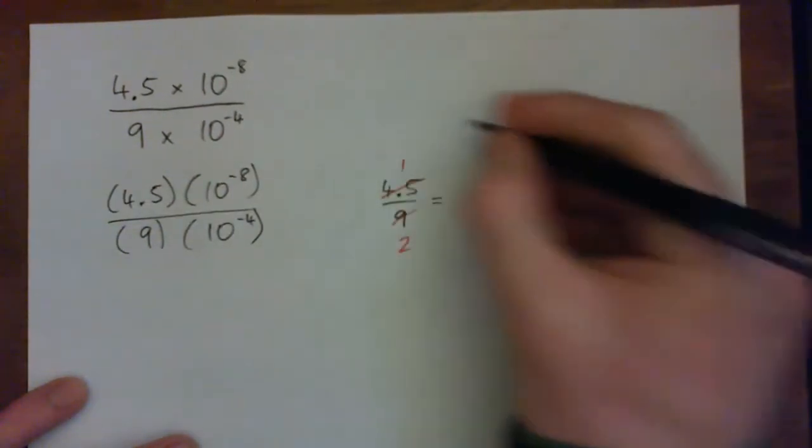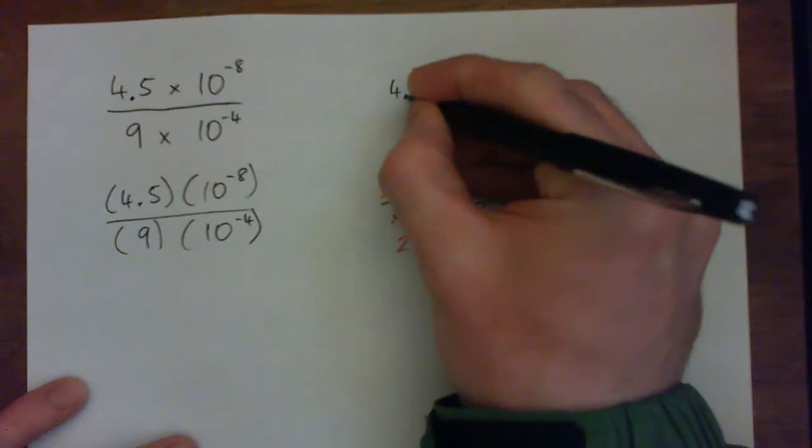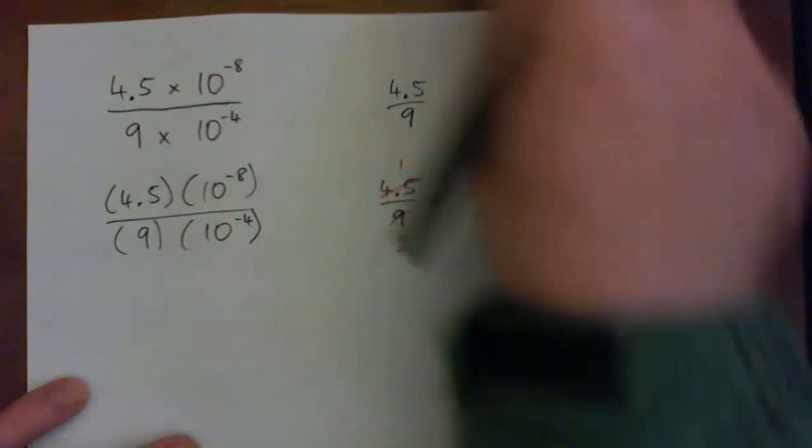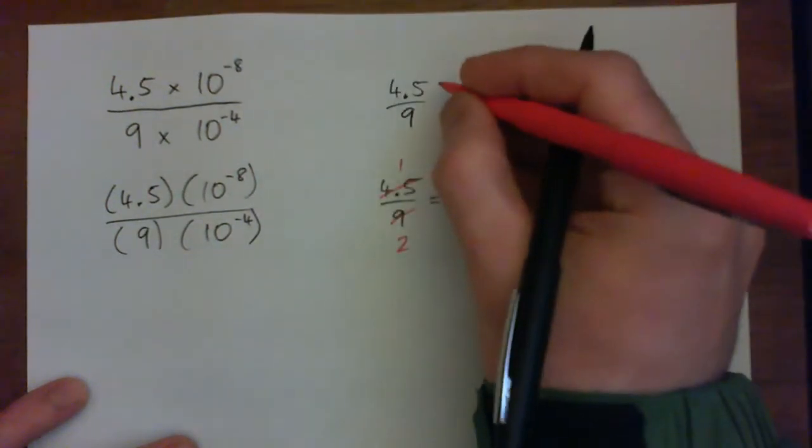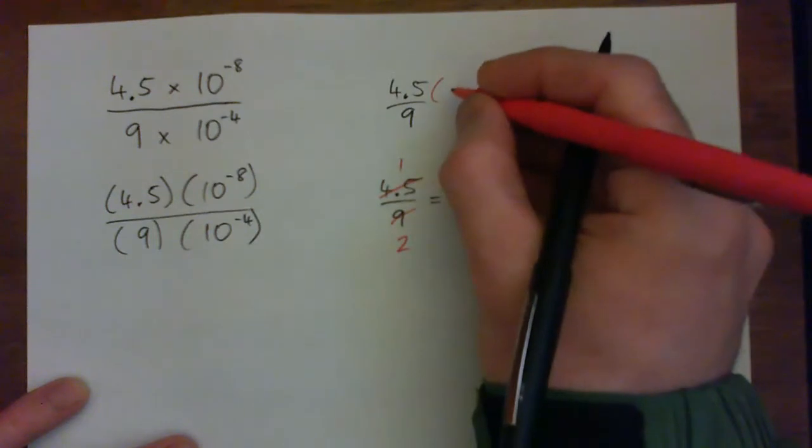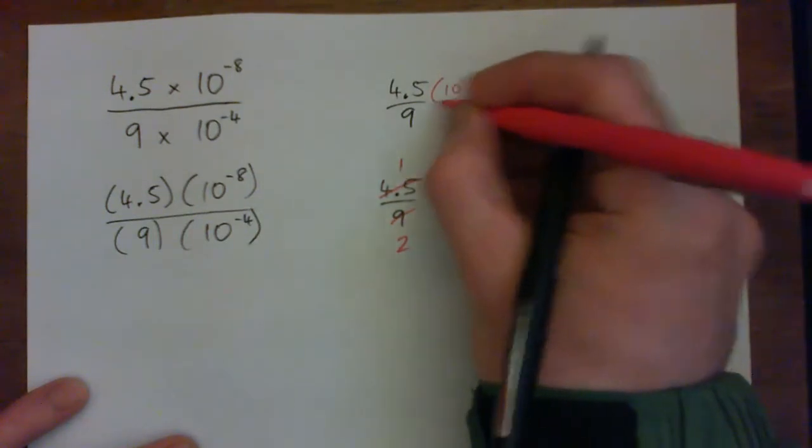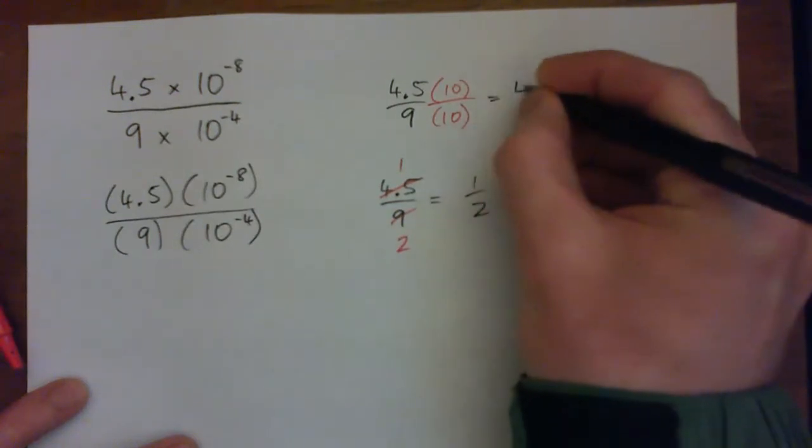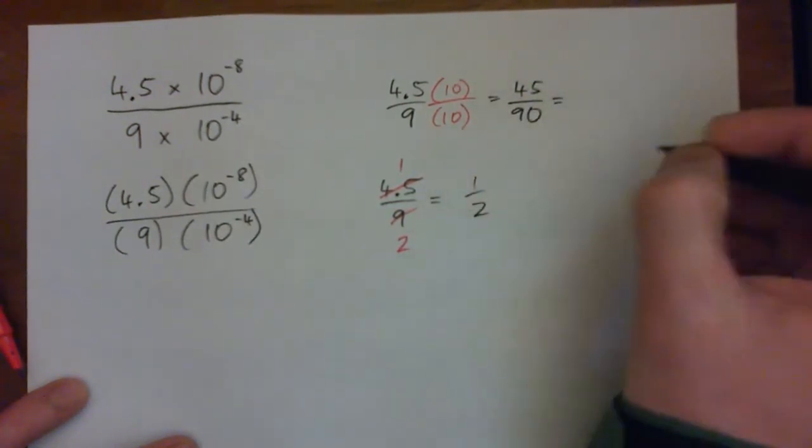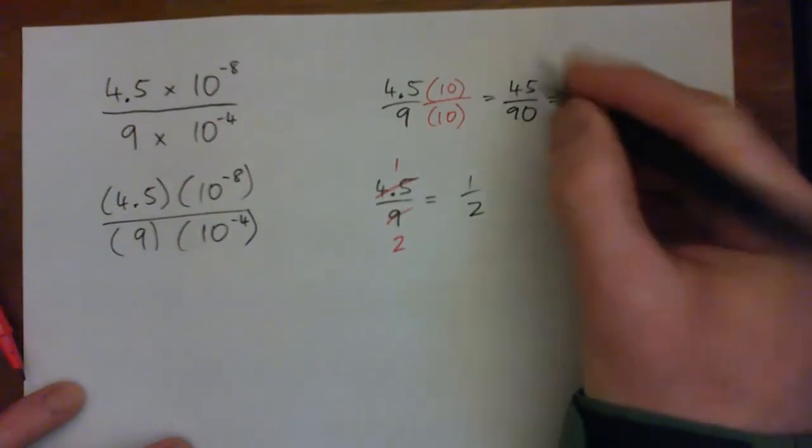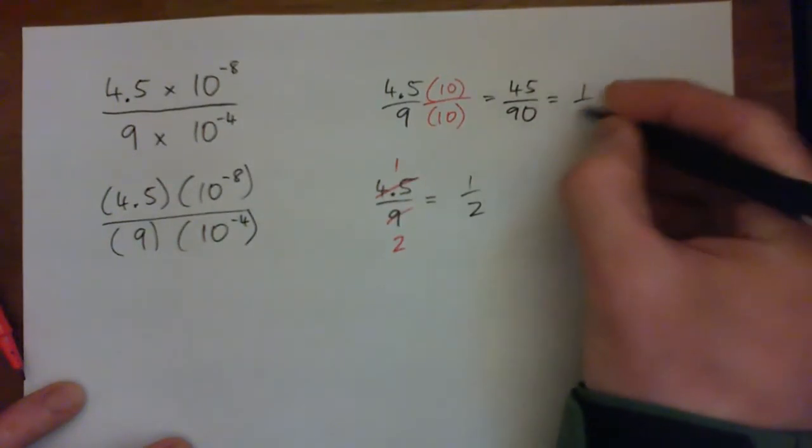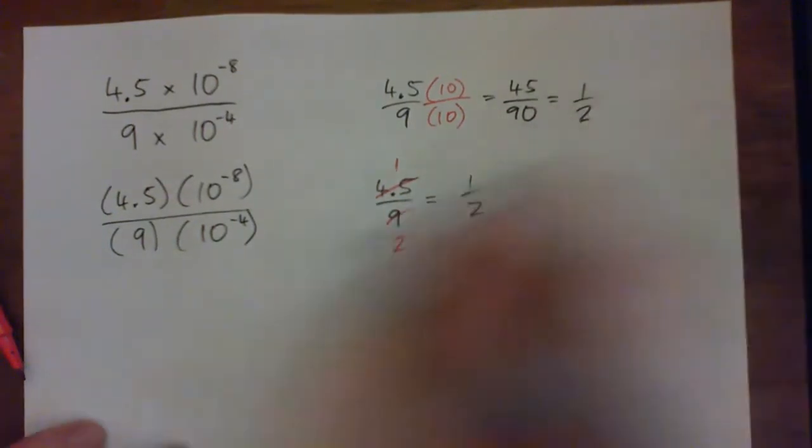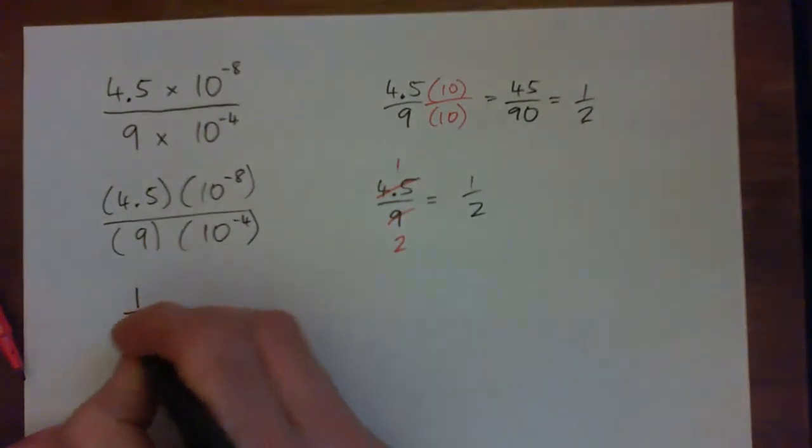Another way to deal with that is you could go 4.5 over 9. You could get rid of the fraction here by multiplying by 10 over 10. That's another common way of dealing with these. So that will give you 45 over 90, right? And 45 over 90, if you simplify that, you'll find that that's 1 over 2. So this guy gives us 1 over 2.